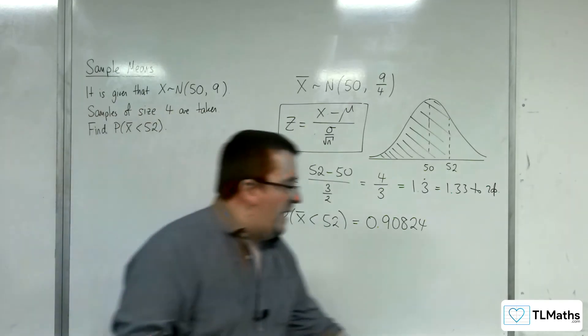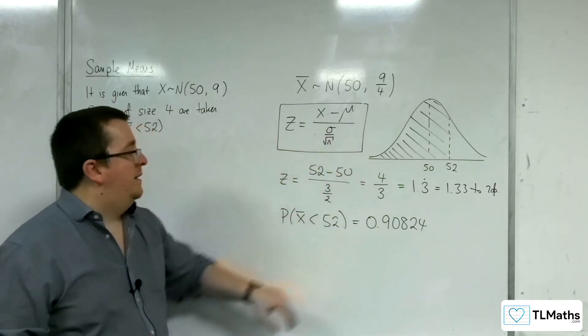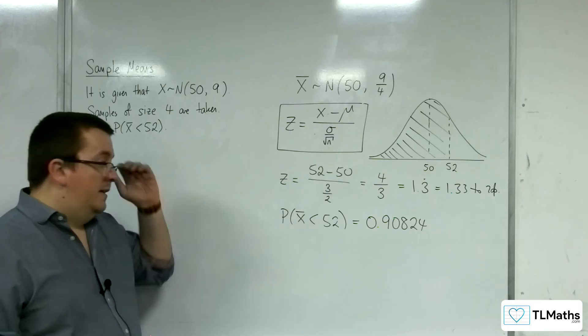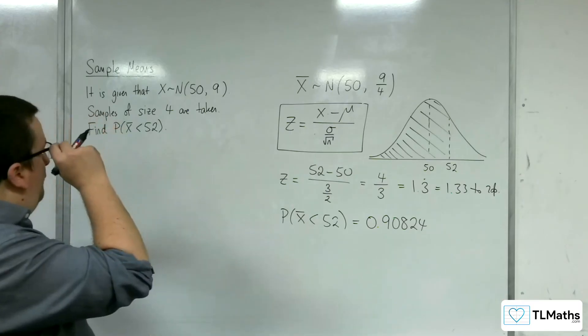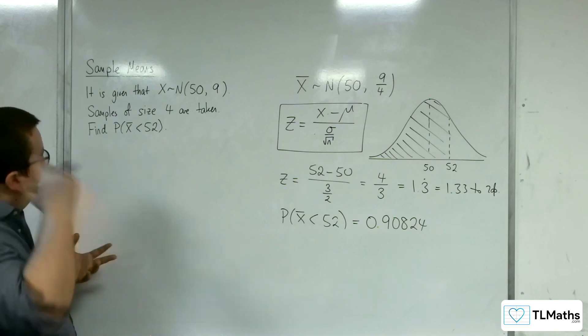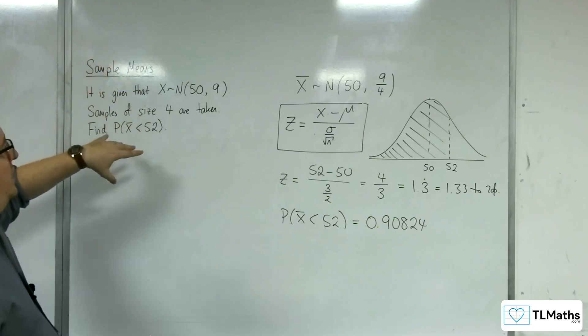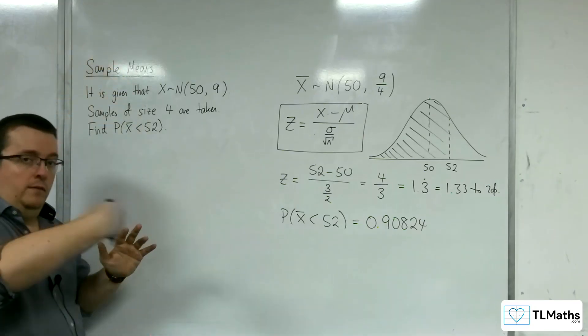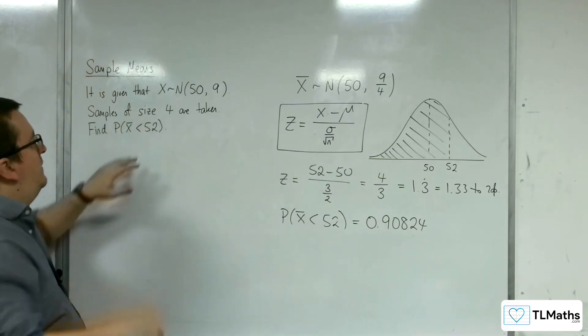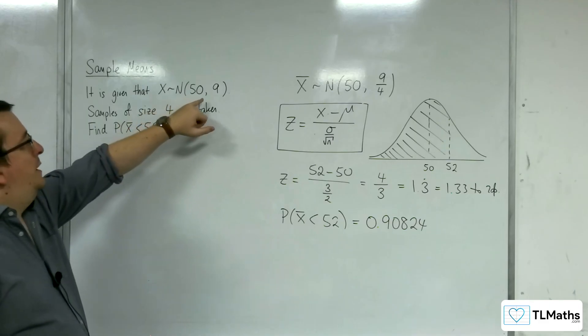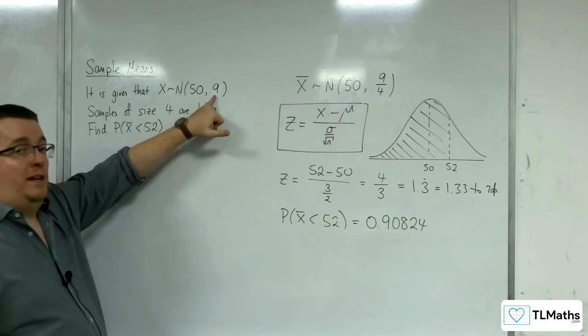And so that is the probability that I would need. So that seems fairly reasonable because if I take a sample of size 4, then I would expect, through averaging, that the probability of getting less than 52 would be quite large because, remember, the standard deviation of the population was only 3.